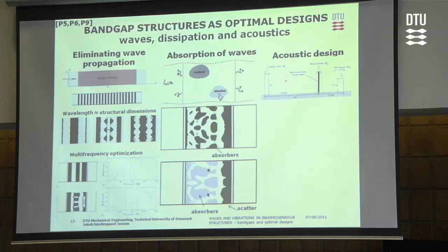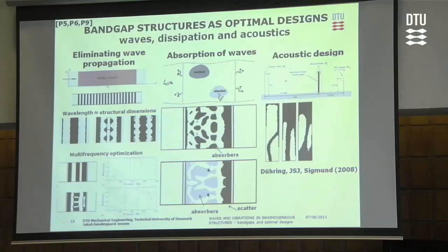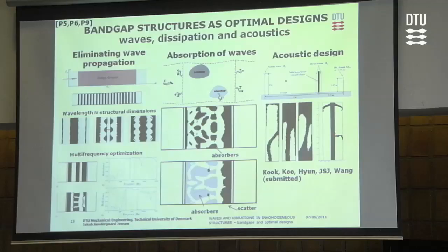As a last example in this section, we worked on acoustic design — optimizing sound barriers to minimize the pressure behind them. We obtained different designs for different frequency ranges. We recently reinvestigated this problem by treating not the sound pressure itself as the objective function, but rather the perception of loudness, which leads to a different objective function and quite new results.